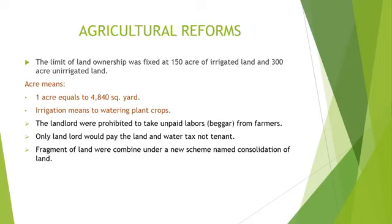Agriculture is the main occupation of the people of Pakistan — about seventy percent of people are involved in agriculture. To save farmers from exploitation, land reforms were announced. The limit of land ownership was fixed at 150 acres of irrigated land and 300 acres of unirrigated land.